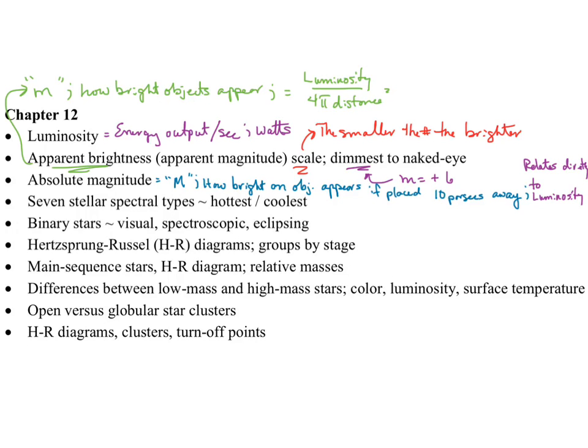The seven stellar spectral types are O-B-A-F-G-K-M. The hottest is O, and M is the coolest.